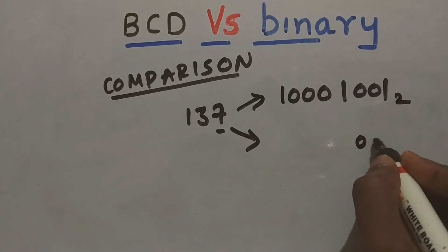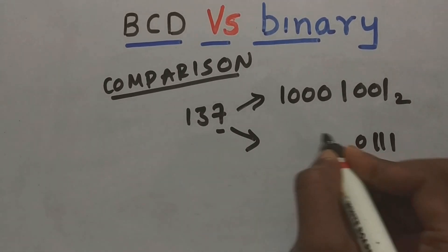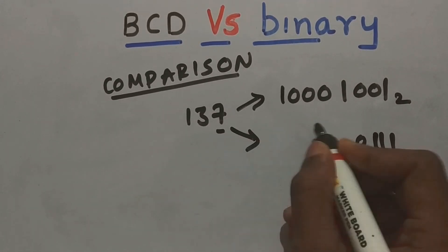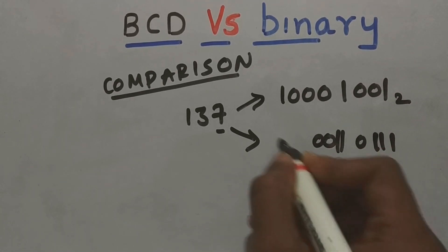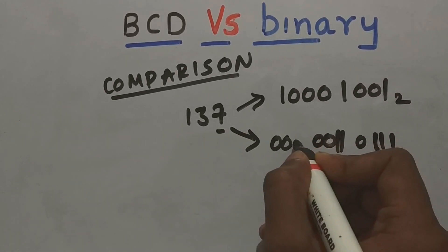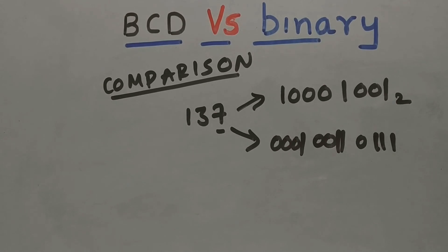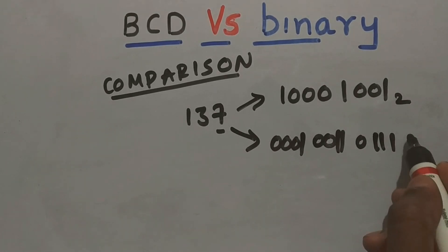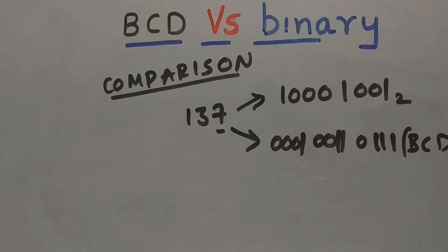So it is represented as 0001 0011 0111. As you can see we got some extra bits in BCD. This is a disadvantage of BCD, that it takes more amount of storage compared to binary.